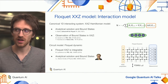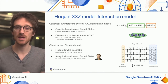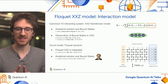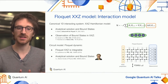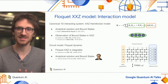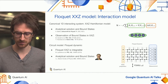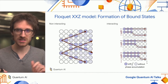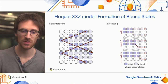Bound states are features that are really easy to observe, because you just need to see that excitations stay together. If you prepare a bound state, the bound state stays together through the evolution. To give you some intuition for why bound states exist in this model...